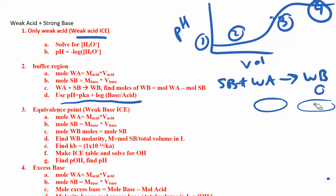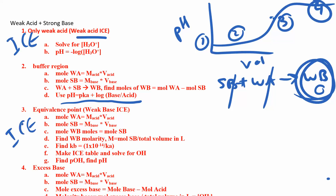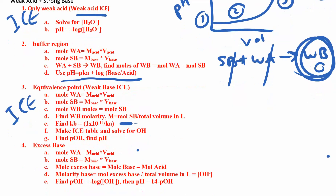At the equivalence point, things get complicated — you have a weak acid and weak base situation. You use up all of your strong base and all your weak acid, and all you have left is your weak base. Divide by the total volume to get the concentration, then set up an ICE table. You have an ICE table in step one and an ICE table here in step three, and don't forget to find the Kb.